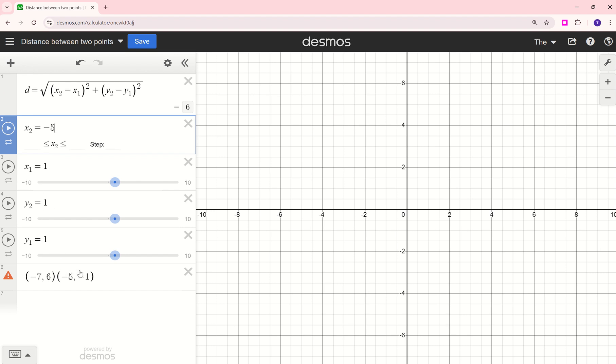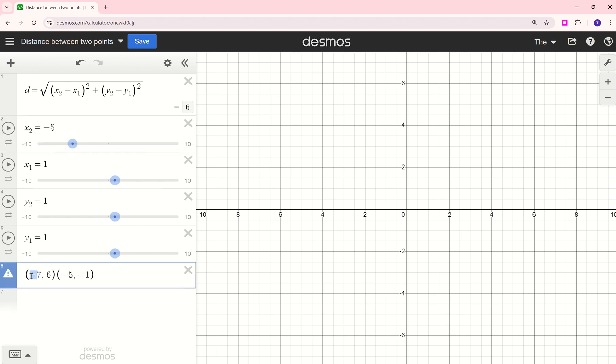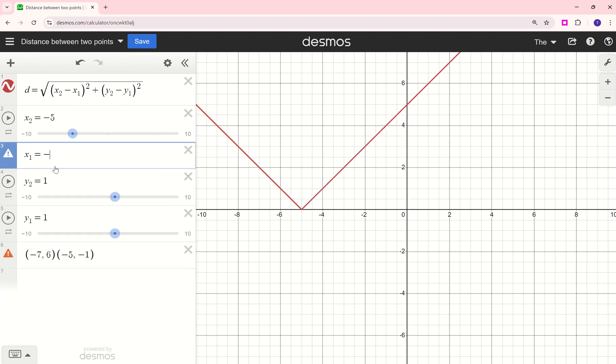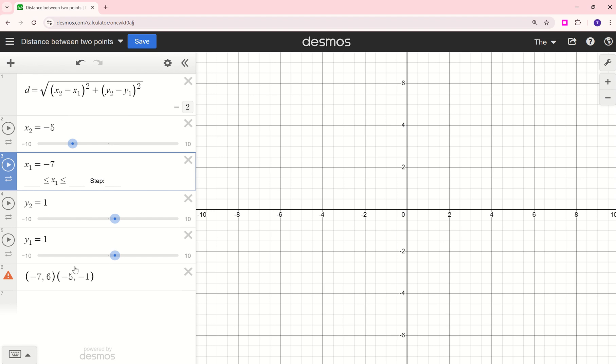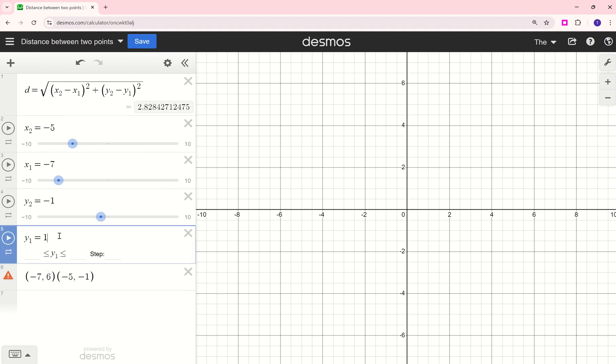My first X value is right here, negative 7. My second Y value is negative 1. And my first Y value is 6. So I'm replacing those variables with the values that correspond to the ordered pairs that I was given.